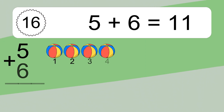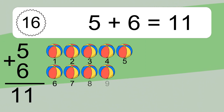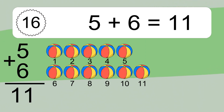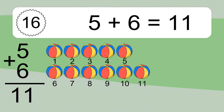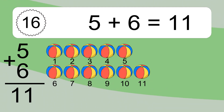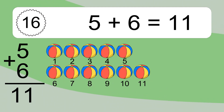5 plus 6 equals 11. Let's count it. 1, 2, 3, 4, 5, 6, 7, 8, 9, 10, 11.